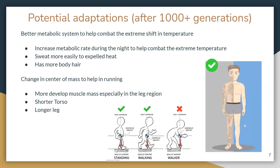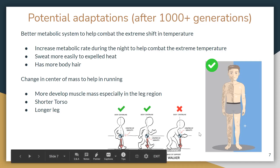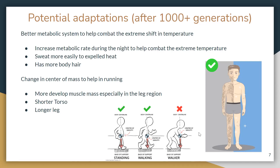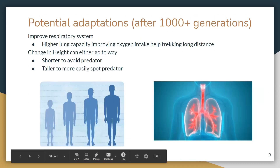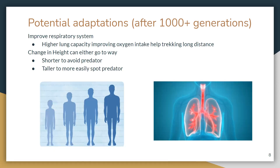As for the potential adaptations after 1,000 generations, we make an educated guess on what traits may be present in our new human. Firstly, they will have systems to combat the extreme shift in temperature during night and day. They may have an increased metabolic rate to combat extreme cold temperatures at night, and may sweat more easily to expel heat during the day, or have more body hair to retain heat. Secondly, they may have a change in center of mass for better running — a more developed muscle mass in the leg region, a shorter torso, and a longer stride. Thirdly, they may have an improved respiratory system, helping them track long distances by increasing lung capacity. They may also change in height to help avoid or easily spot predators and prey.